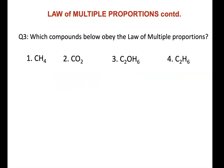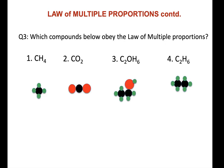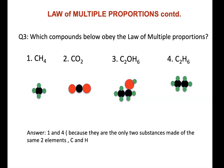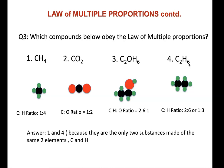Now with chemical formulas: can you identify which compounds obey the law of multiple proportions and state the ratios in which the atoms combine? The answer is compounds one and four. Their ratios are: for one it is 1:4, and for four it is 2:6, which simplifies to 1:3. The ratios for the other atoms in these two compounds are also shown.